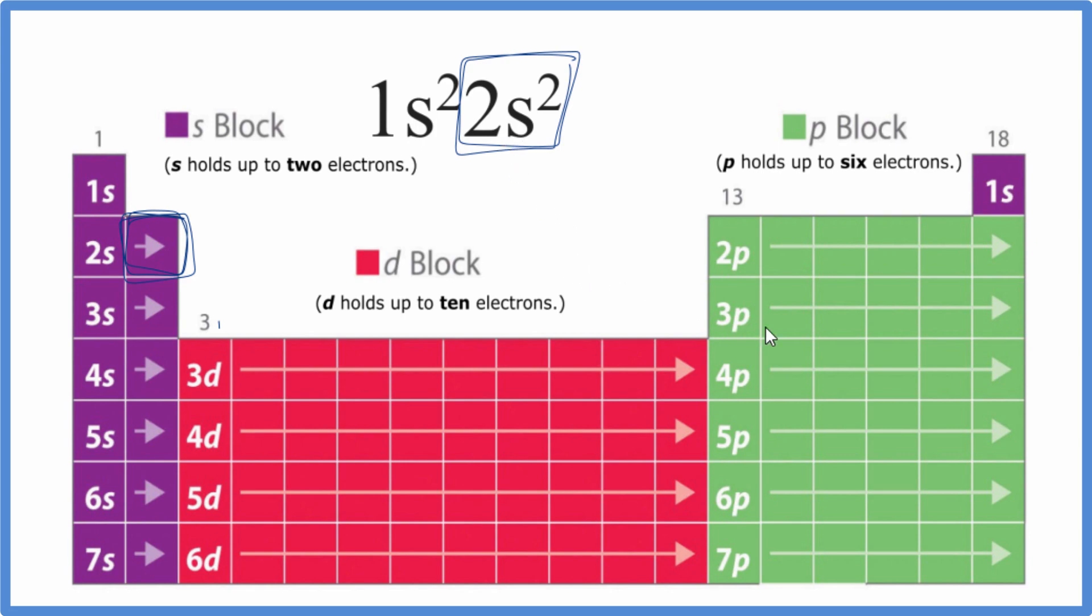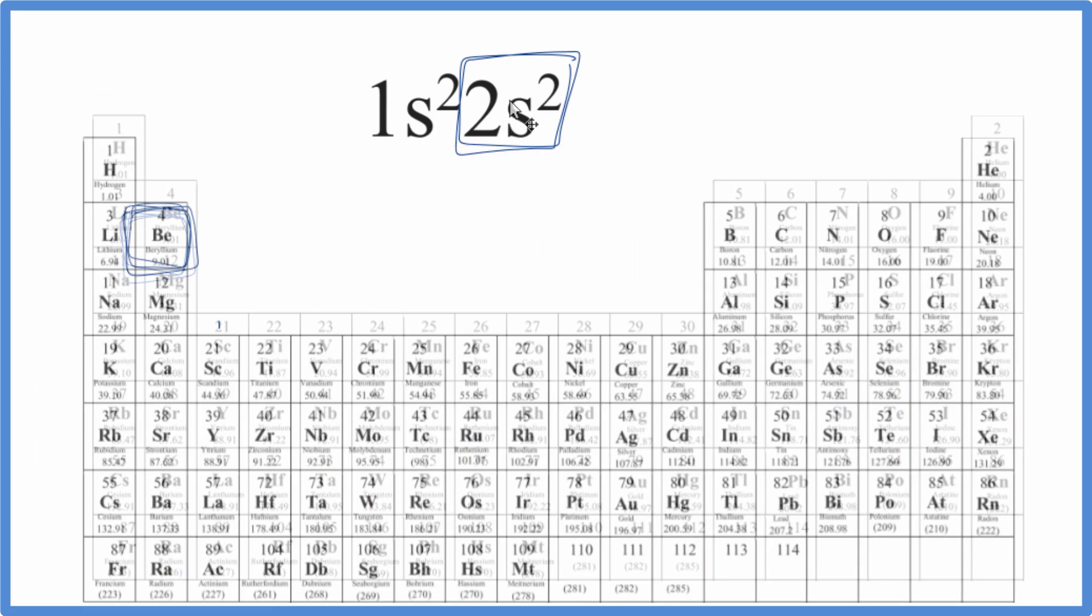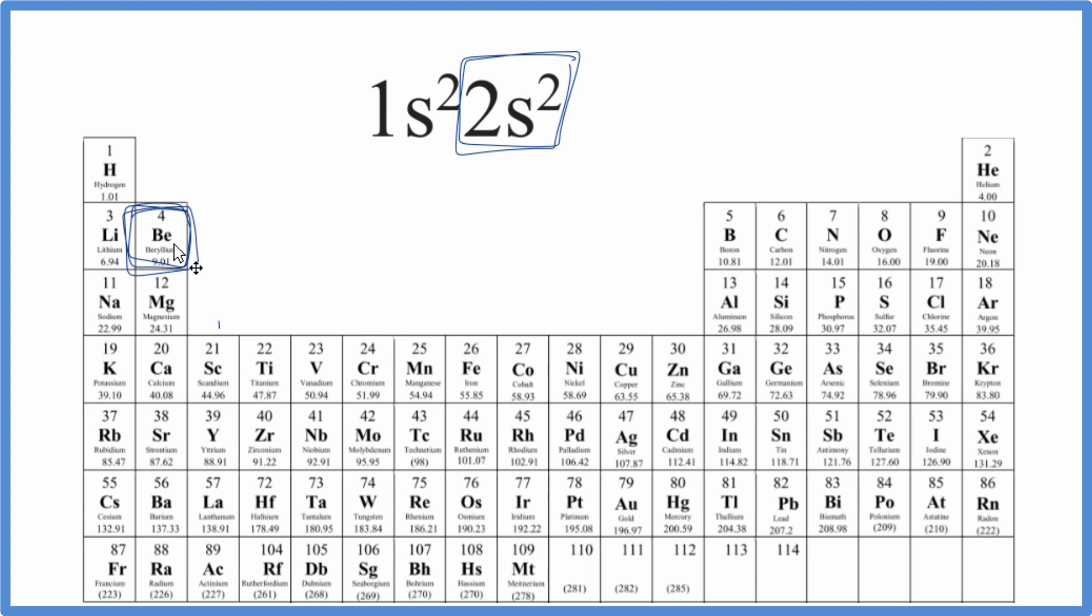Let's go back to our periodic table with the elements written in. And we can see that it's the same answer, beryllium. So beryllium has the electron configuration 1s2, 2s2.